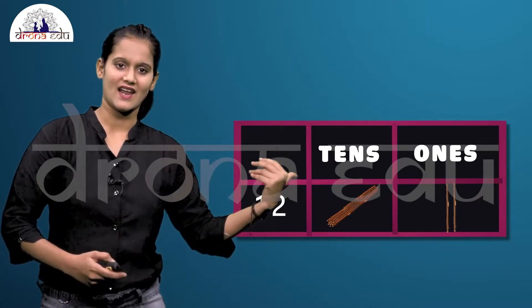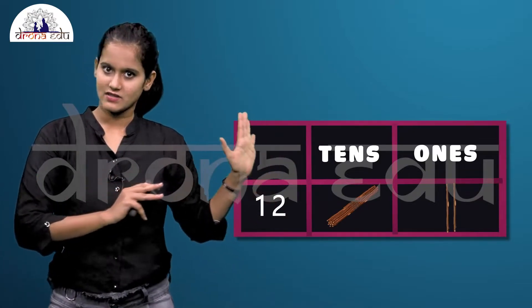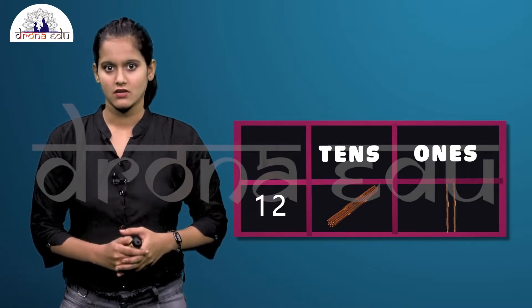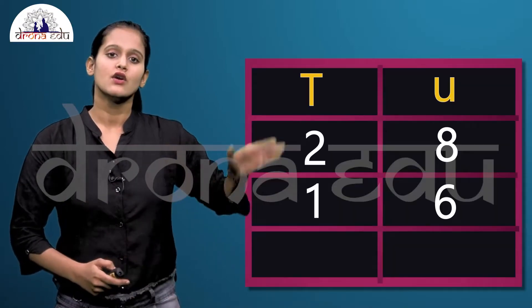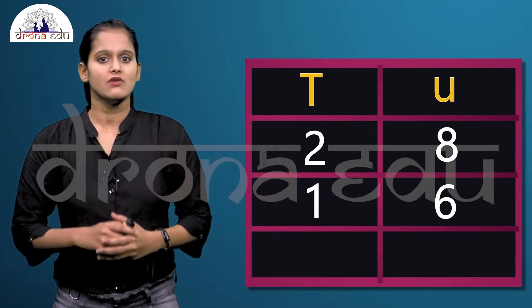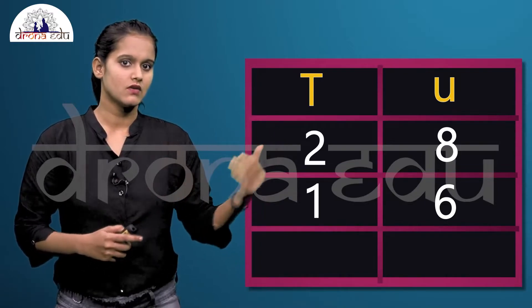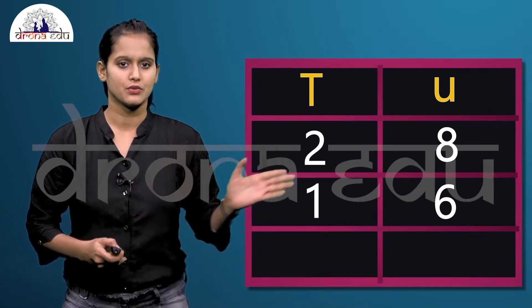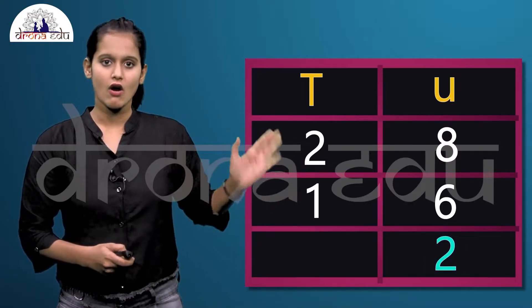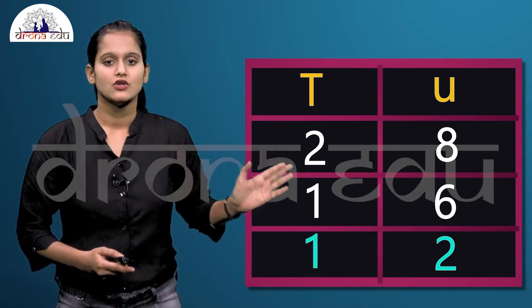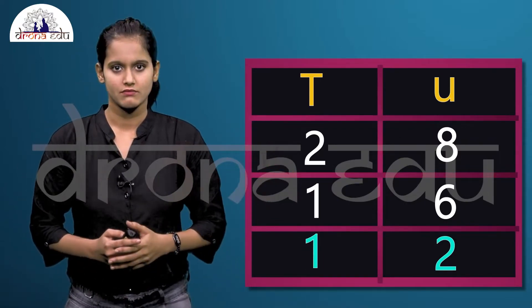You can also express this in the form of a place value chart, with a units column and a tens column. In the units column you have eight and six, so eight minus six gives you two. In the tens column you have two and one, so two minus one gives you one. In total, you get 12.